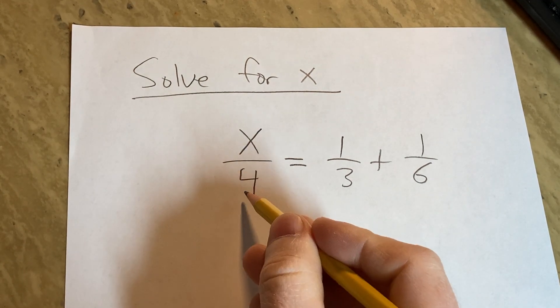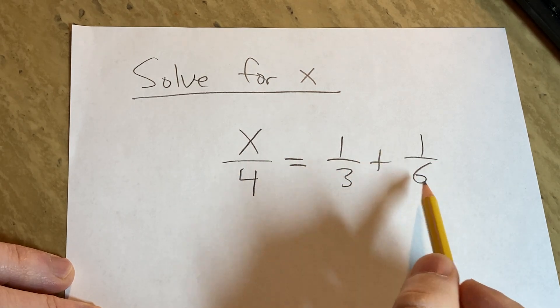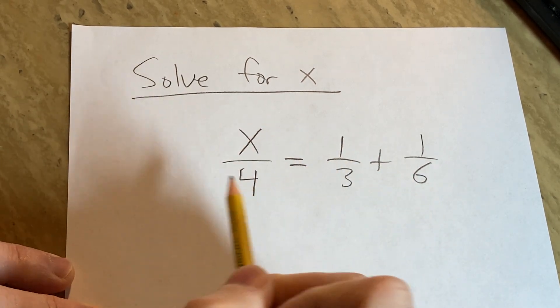Solve for x. We have x over 4 equals 1 over 3 plus 1 over 6. We have to find the variable x in this problem.